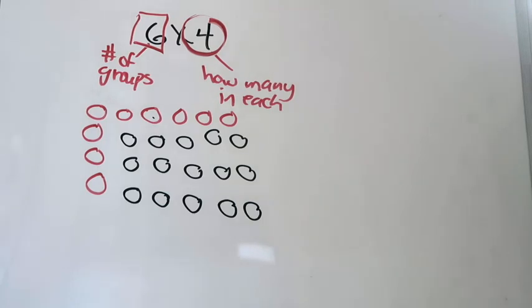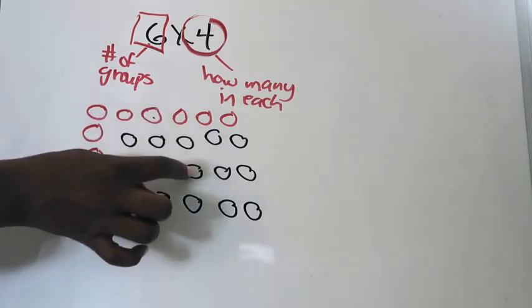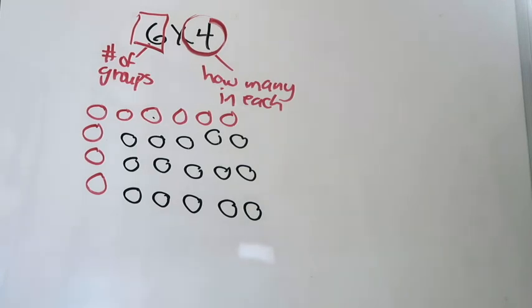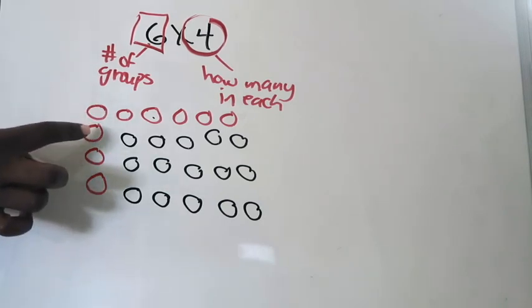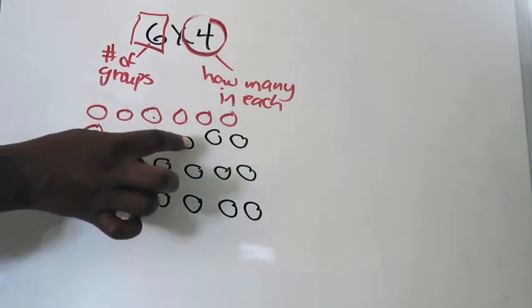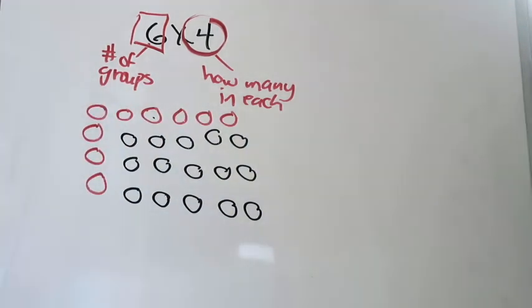Now let me double check. Do I have 6 groups going across? 1, 2, 3, 4, 5, 6 — yes. Do I have 4 in each group? Checking each group: 1, 2, 3, 4 — yes, each group has 4. Now I need to figure out what my answer is — what is 6 times 4 equal to? To find out, I'm going to count how many counters I have in all: counting all 24 counters one by one gives me 24 in all.